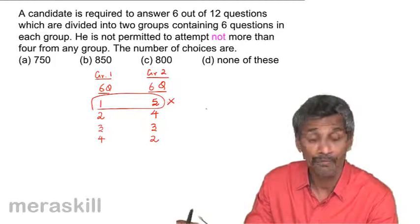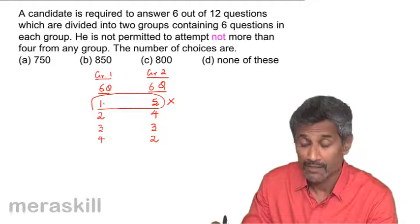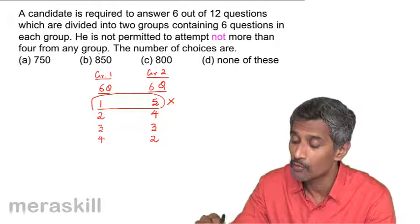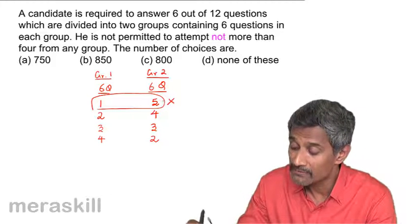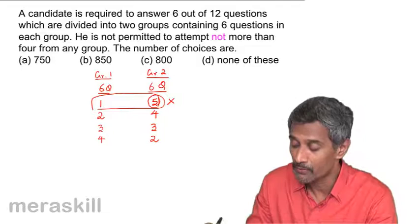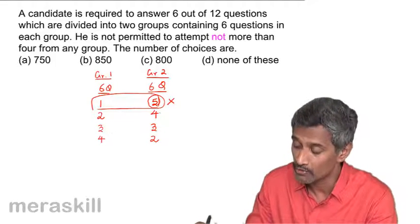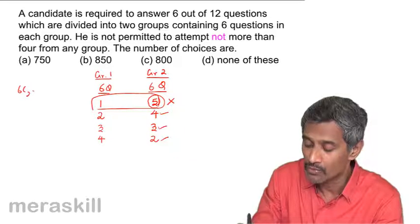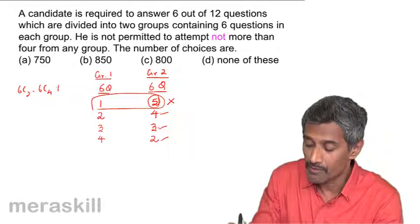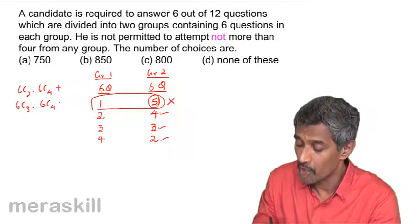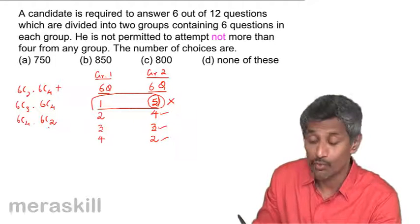Choosing one from one group and five from the other is not possible because it is told he is not permitted to attempt more than four. So one-plus-five is totally out of the question, as is five-plus-one. The only valid possibilities are two and four, three and three, or four and two. This gives us 6C2 × 6C4 + 6C3 × 6C3 + 6C4 × 6C2.